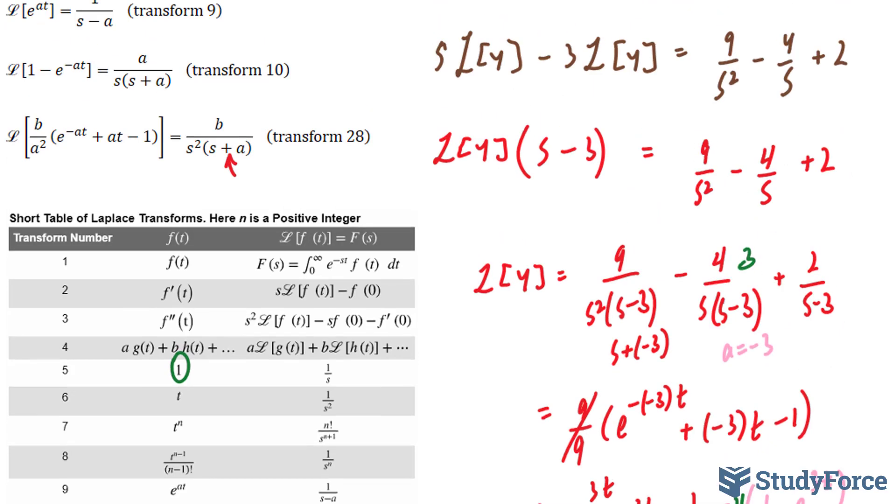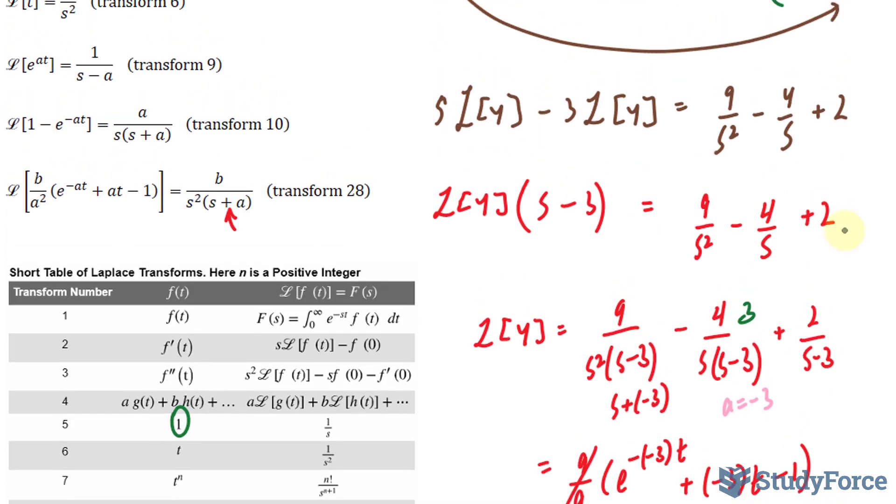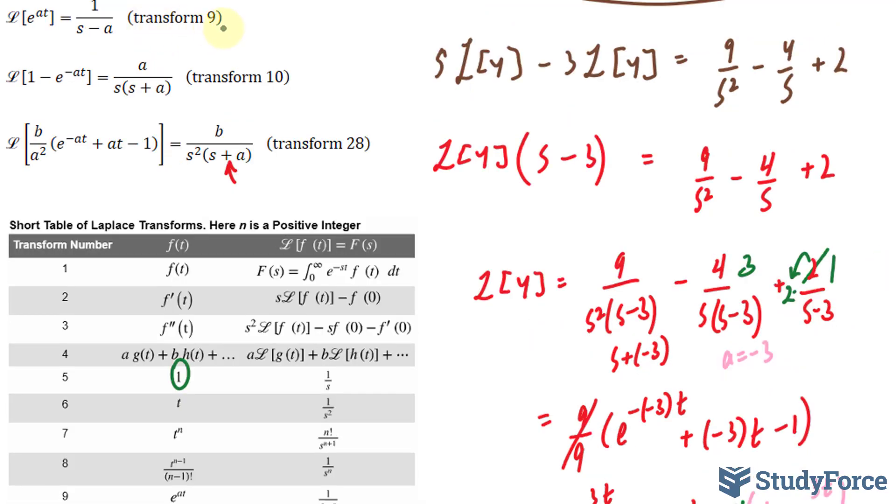Finally, we have 2/(s − 3), and I said that matches transform 9, and it does, but not perfectly, for the same reason as the previous term. This is supposed to be 1, whereas it's a 2. So I can pretend that that 2 is out here, and that's a 1. So transform 9 becomes e^(at).